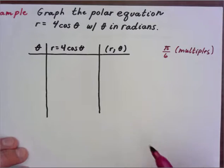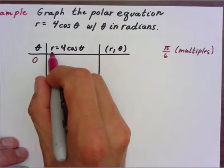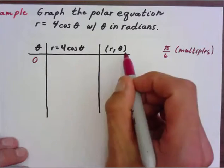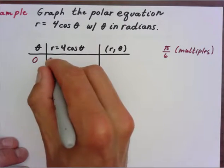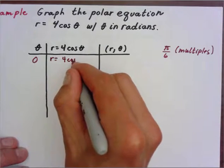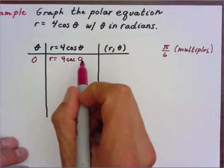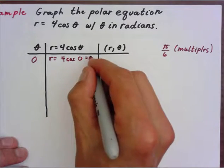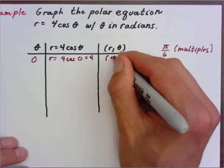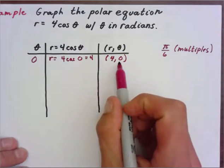I'm going to start with zero. Theta is equal to zero, so r equals four times cosine of zero degrees. The cosine of zero is one, so r is going to be four. Your first point is four comma zero — that's our first polar point.